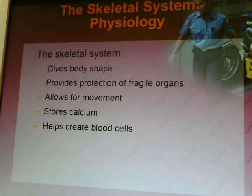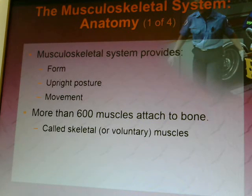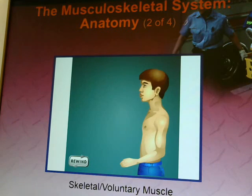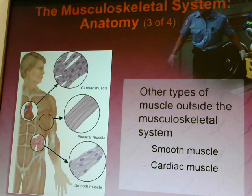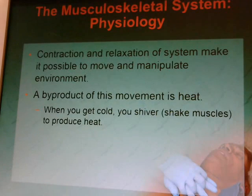The skeletal system gives the body its shape, provides protection for fragile organs, allows for movement, stores calcium, and helps create blood cells. The muscular-skeletal system provides form, upright posture, and movement. There are more than 600 muscles that attach to bone, called skeletal or voluntary muscles. Other types of muscle outside the skeletal system include smooth muscle — found in the lungs and intestinal tract — and cardiac muscle, found in the heart.